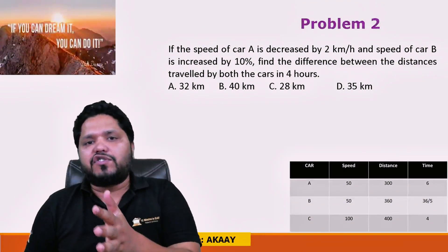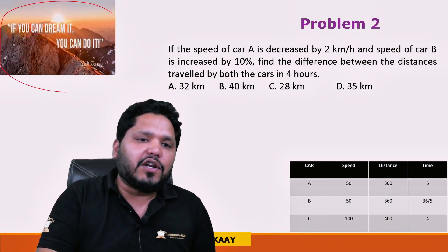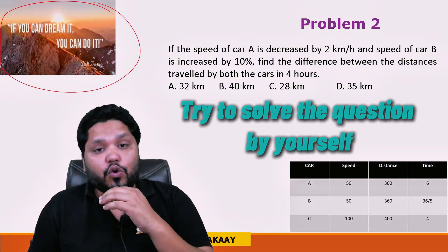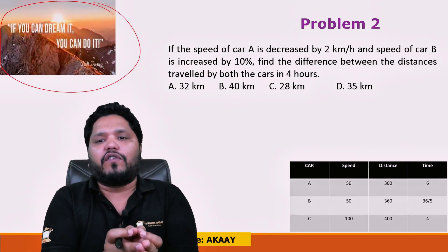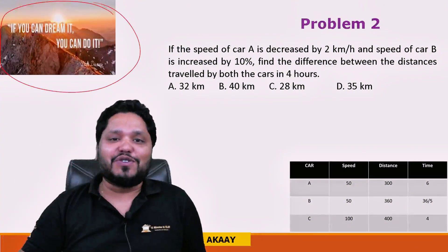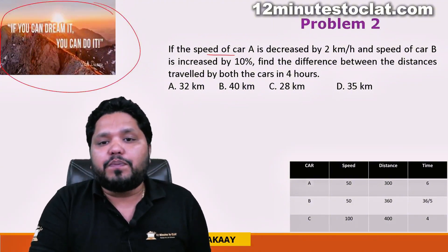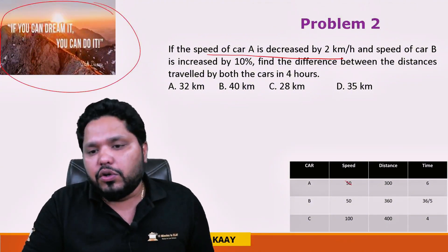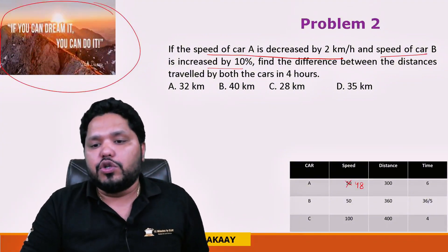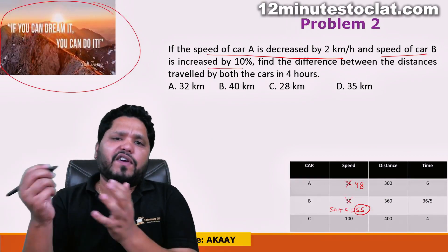Please pause the video and try to solve the questions by yourself first — that will be very helpful. Question 2: The speed of Car A is decreased by 2 km/h, so the new speed of Car A becomes 48 km/h. The speed of Car B is increased by 10%, so Car B's new speed = 50 + 5 = 55 km/h.